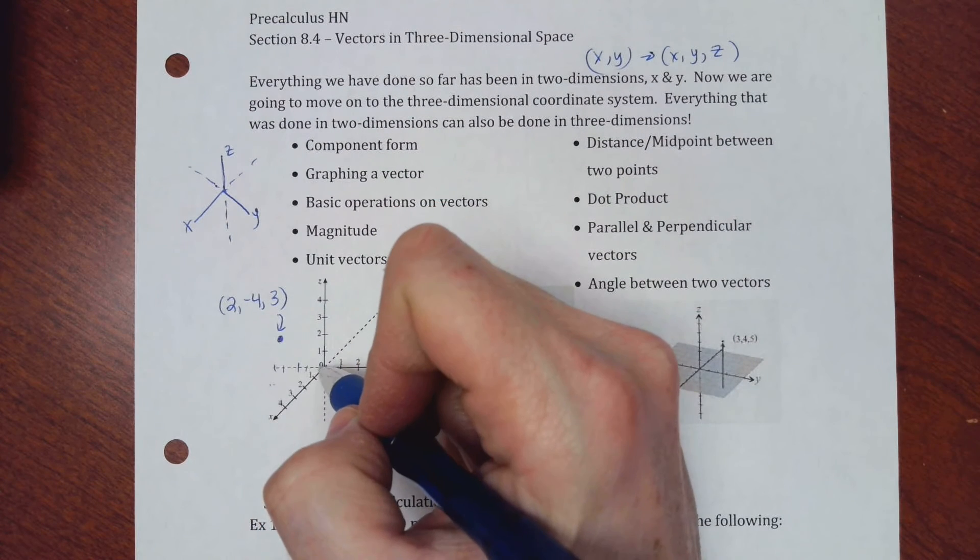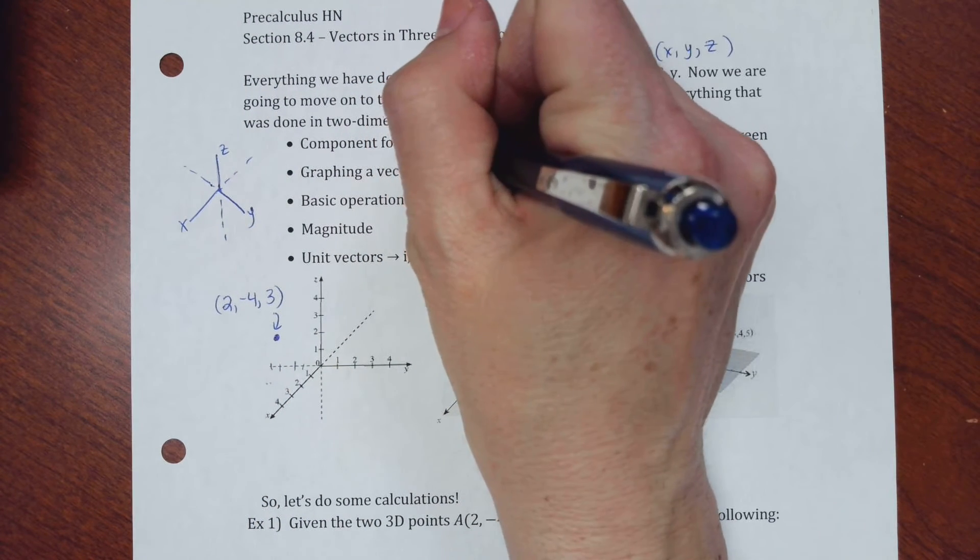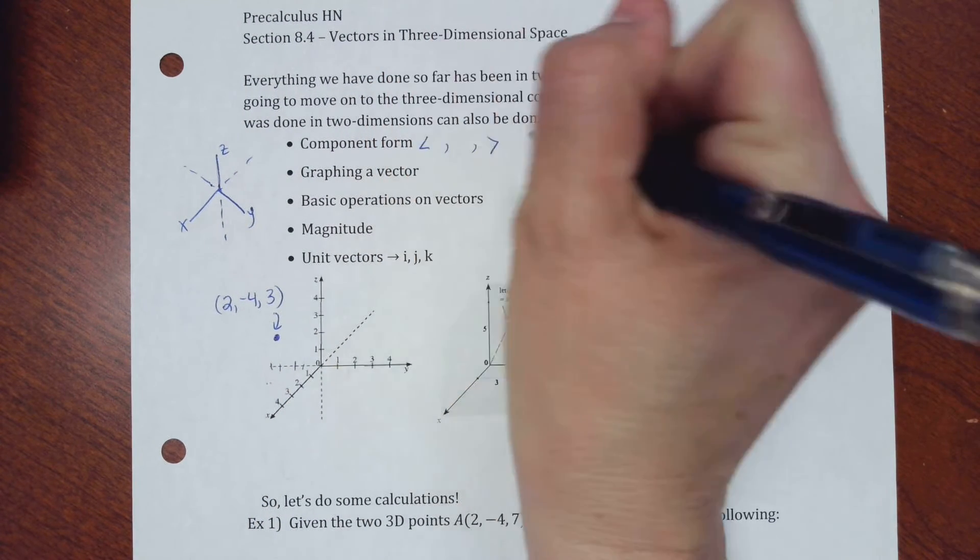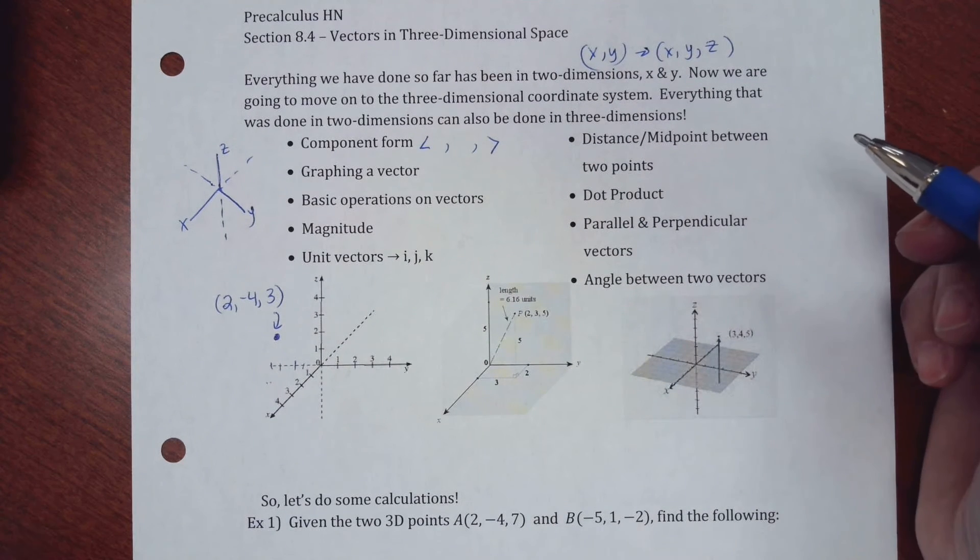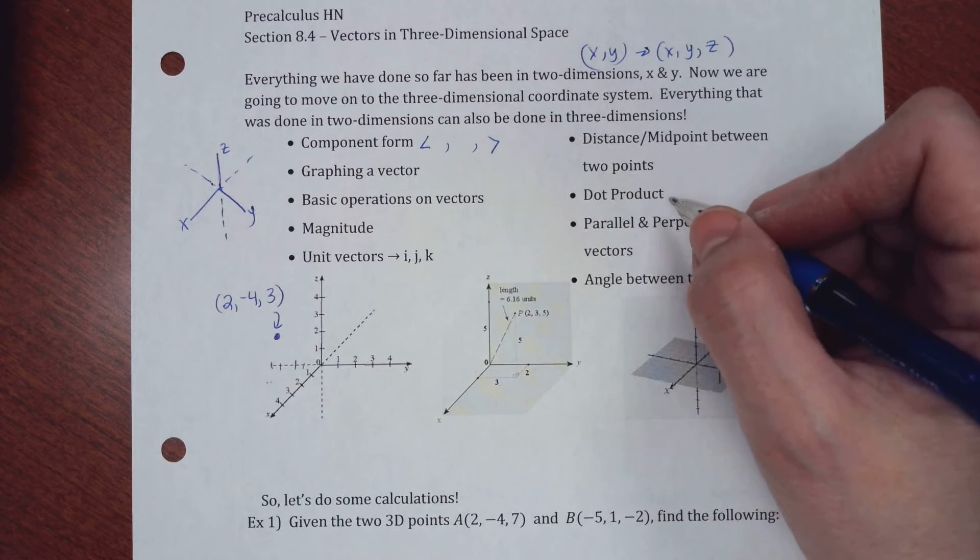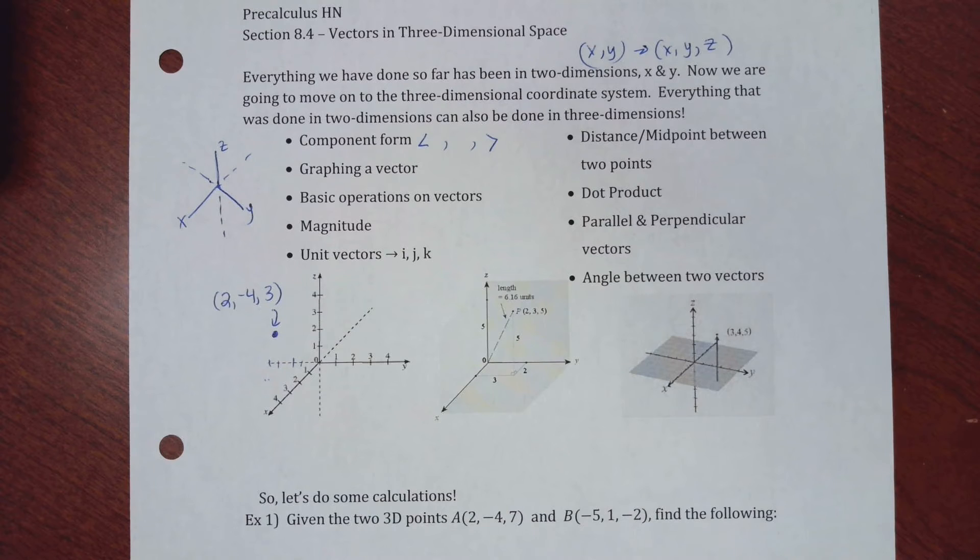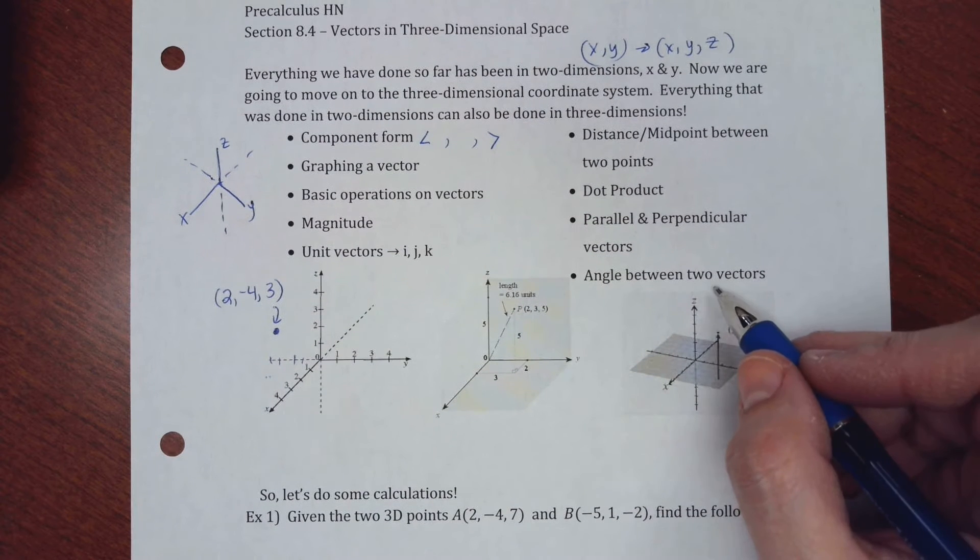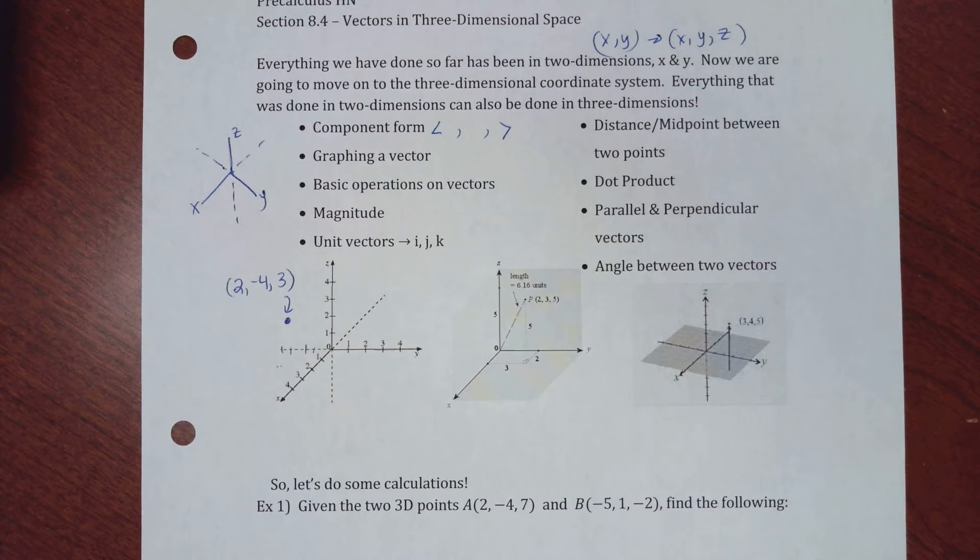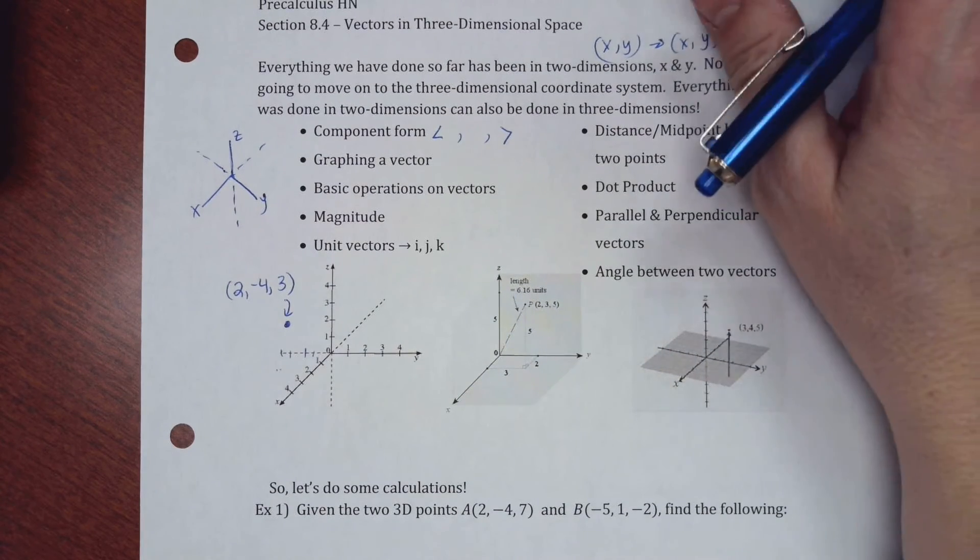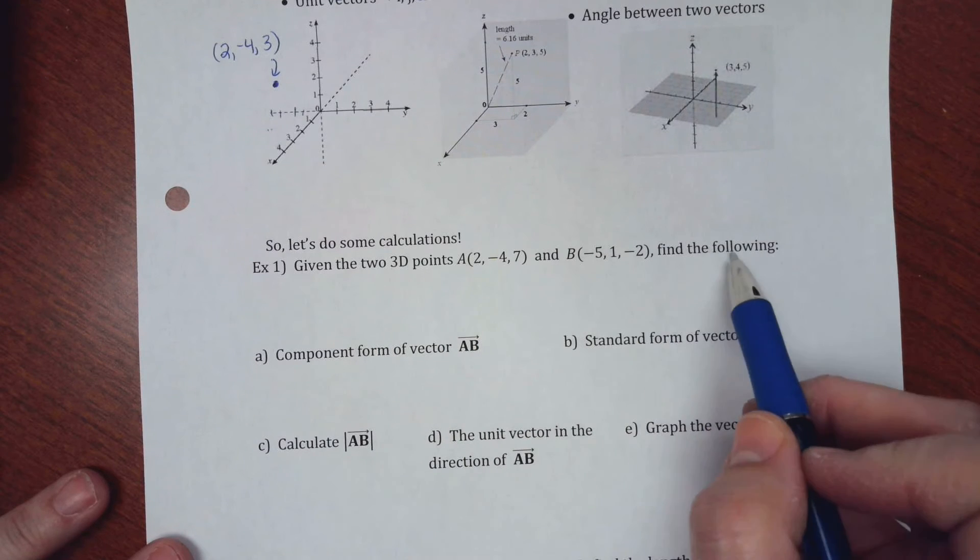So everything that you did in two dimensions, you're going to do in three. So if this was a vector, I'd go from here to there. That would be my vector 2, negative 4, 3. Component form, you're just going to have three parts to it, three sets of numbers. Midpoint or distance formula has three pieces instead of two. Dot product, you're going to multiply three sets of numbers together and add them up. Everything just has a third part to it. Angle between two vectors, you're going to have three pieces, but it's fine. So we're just going to do examples of those things.